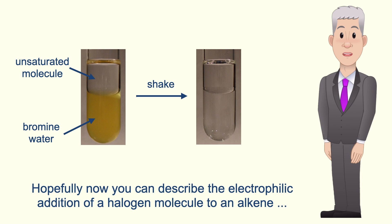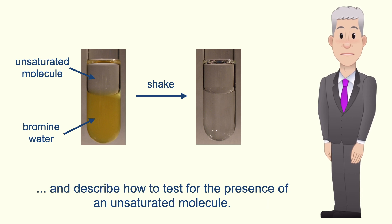Hopefully now you can describe the electrophilic addition of a halogen molecule to an alkene and describe how to test for the presence of an unsaturated molecule.